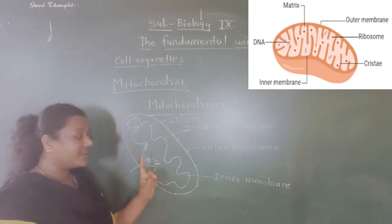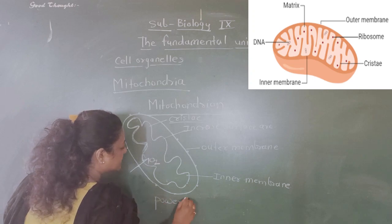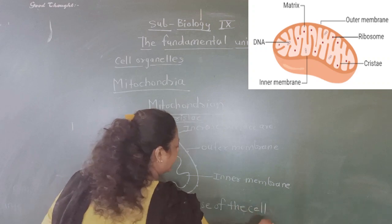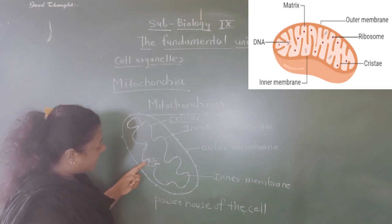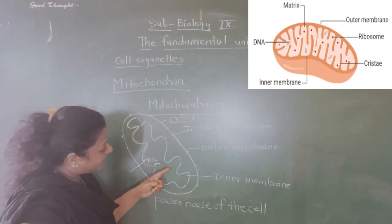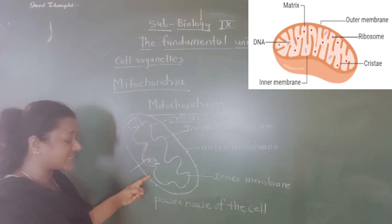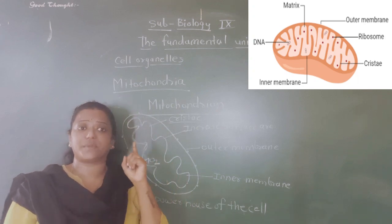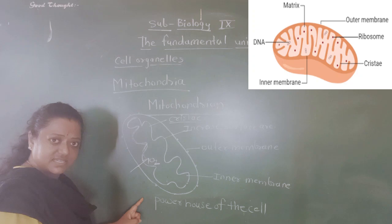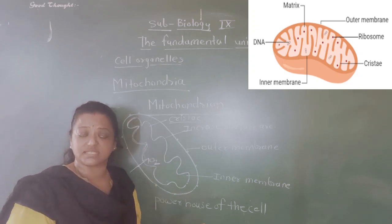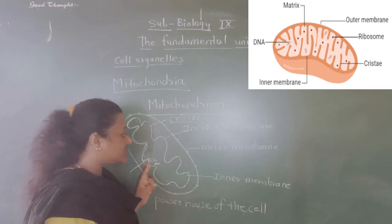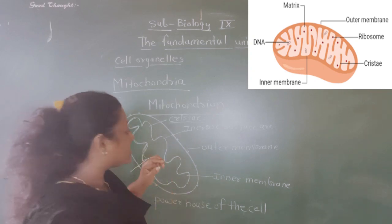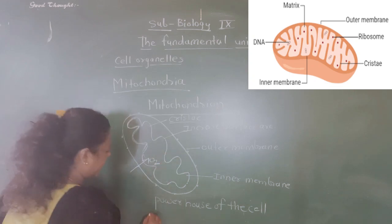That energy is stored in the mitochondria in the form of ATP. So this mitochondria is called the powerhouse of the cell. Oxygen enters the inner membrane, the cristae, where nutrients are broken down in the presence of oxygen — that is aerobic respiration. The result of aerobic respiration is energy, stored as ATP.